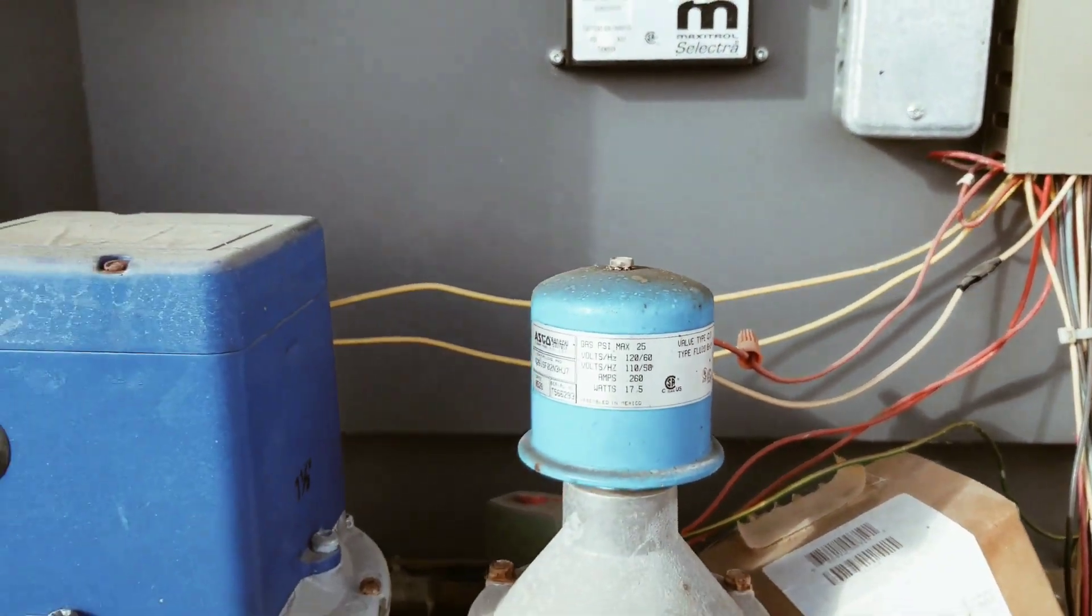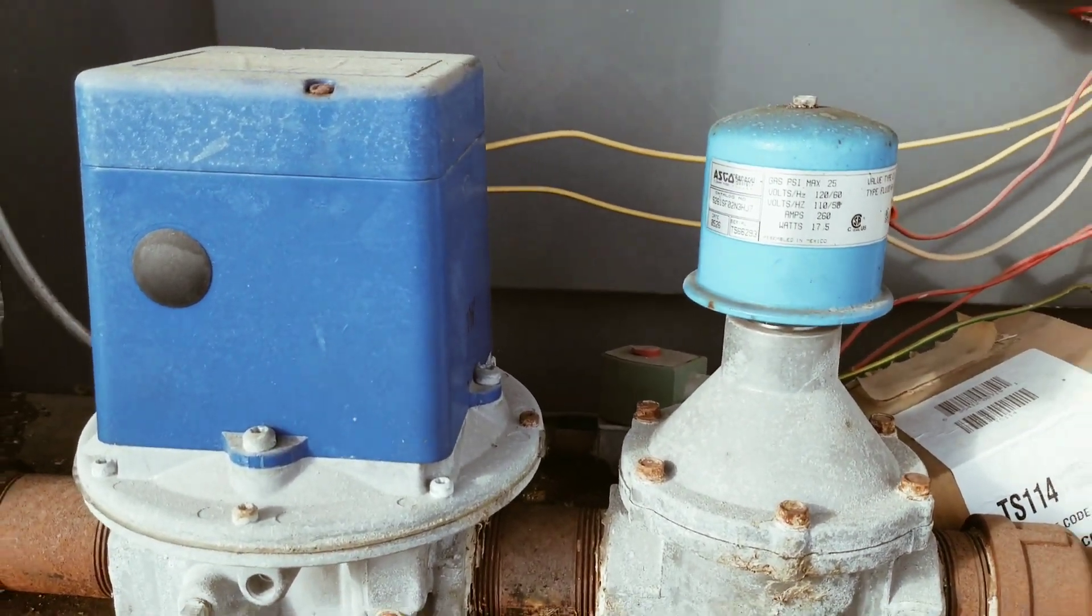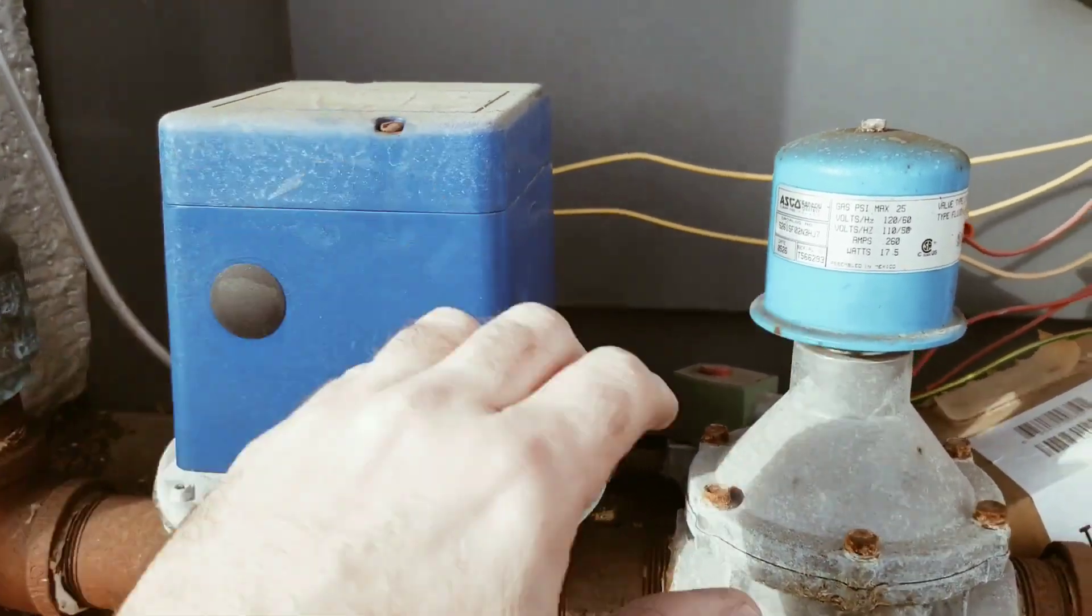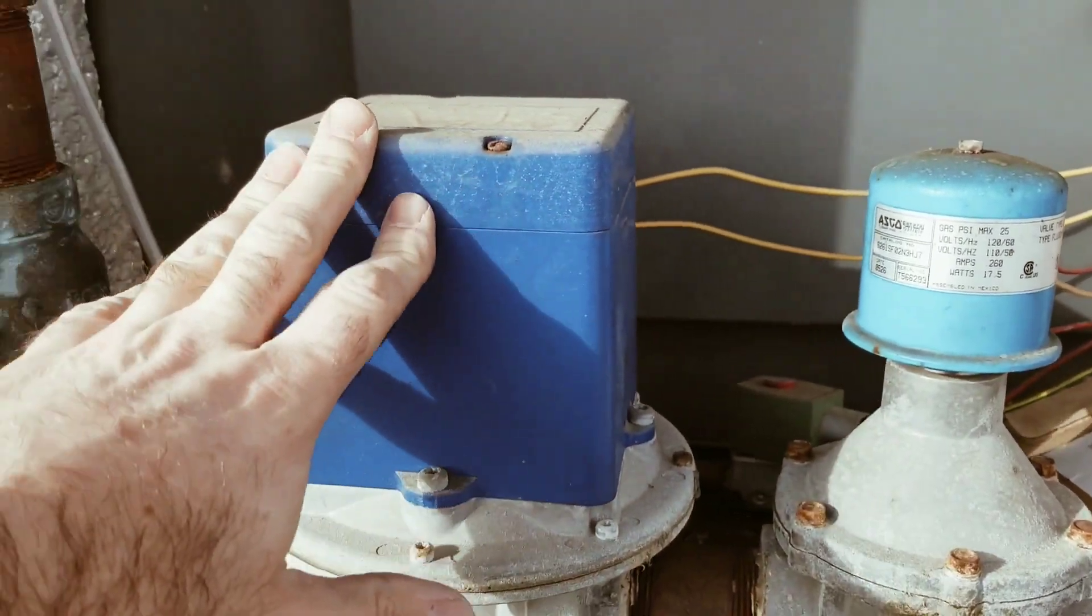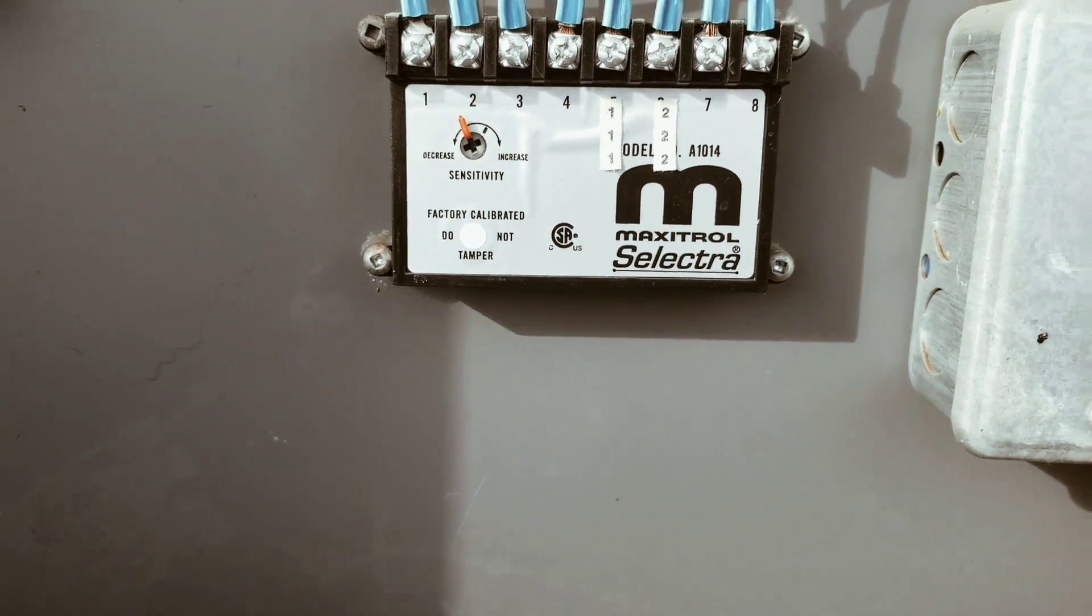We have two gas valves. We have an open and closed. And one works in conjunction. This one here, this is your open and closed. This one works in conjunction with the Maxitrol controller here and the dial downstairs that you set it to.